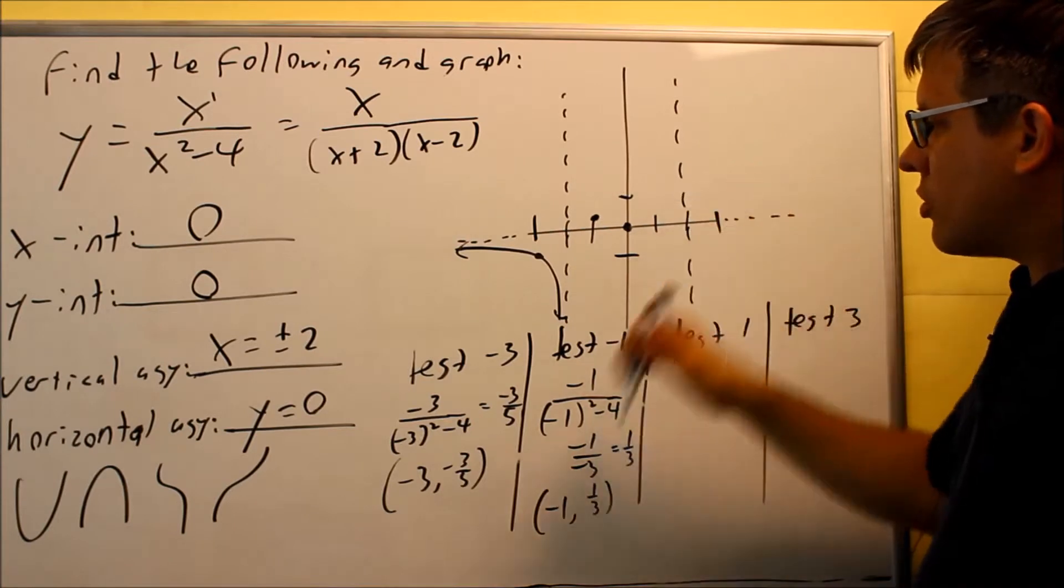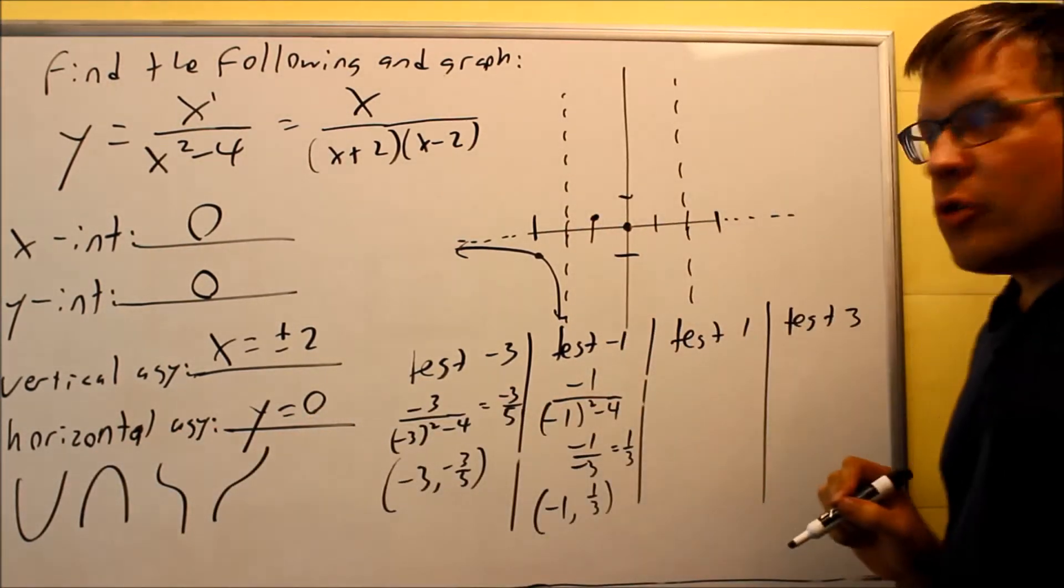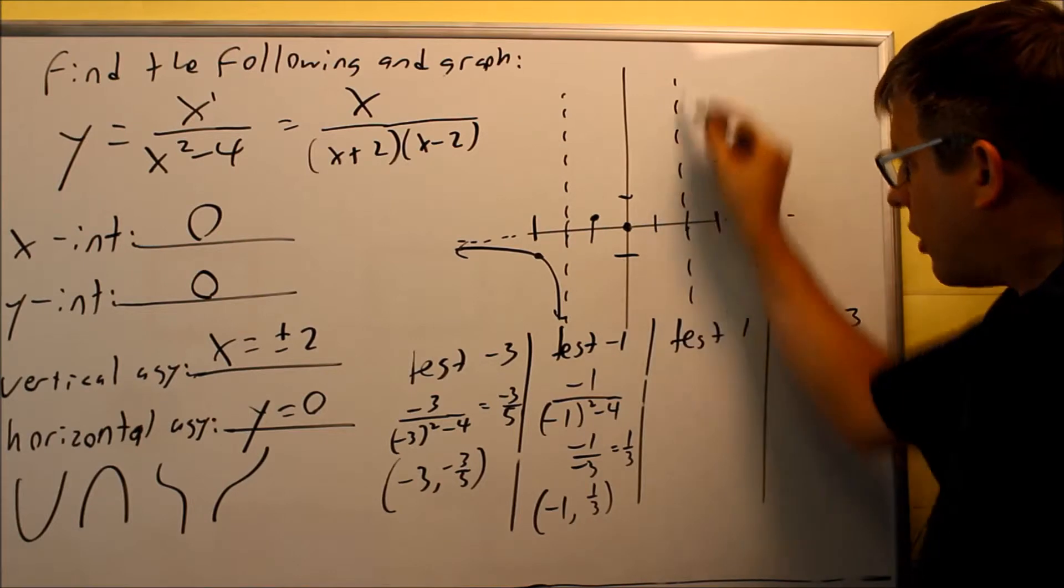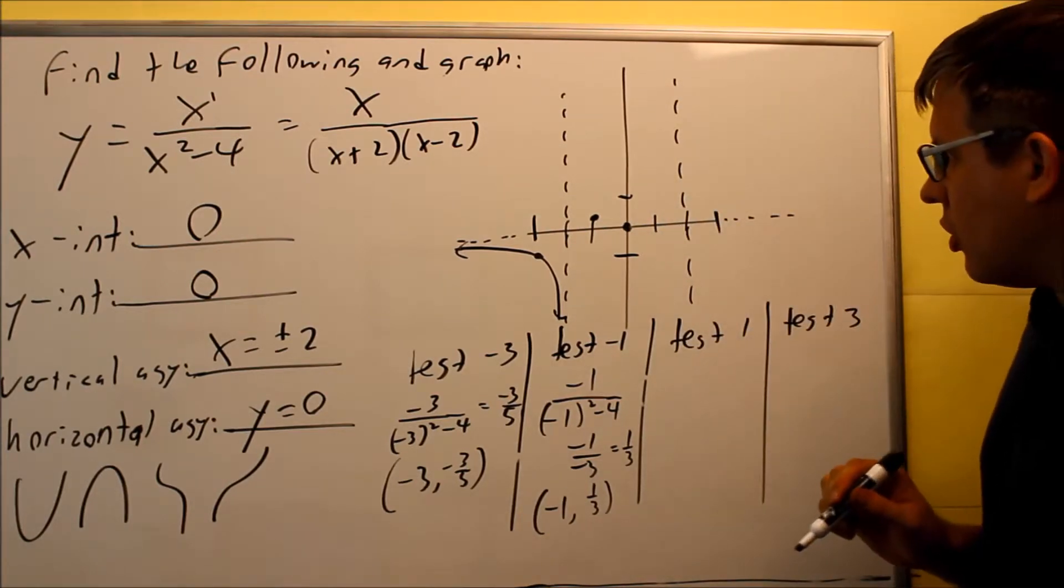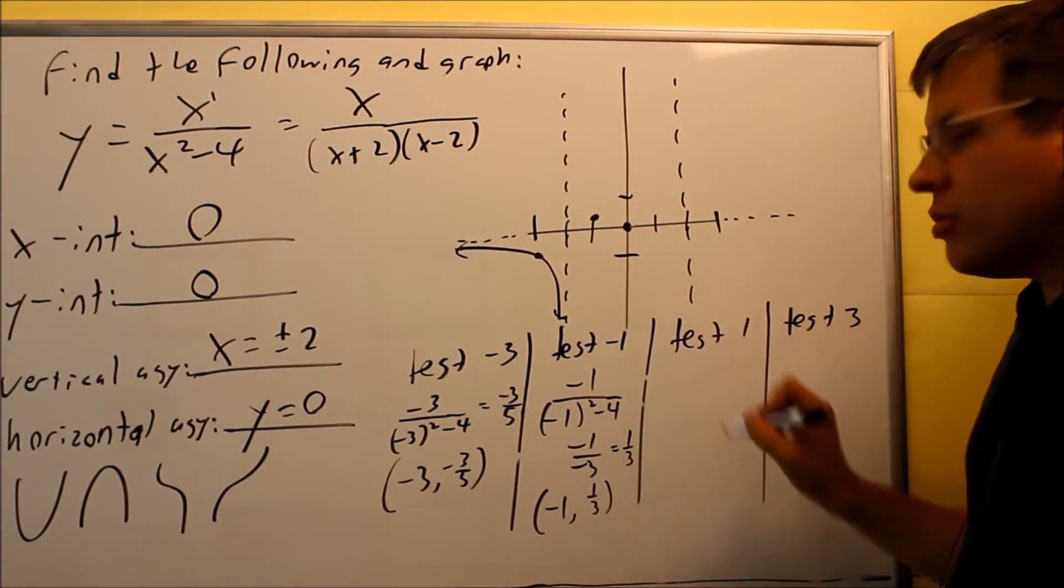Still, I don't have enough information to know which of the four shapes it would be, because it could go down and do this, or it could come down and go up. So I don't really know yet what exactly that's going to look like until I do the next test point.